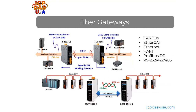We also provide fiber gateways that extend communication distances of CAN, EtherCAT, Ethernet, HART, PROFIBUS DP, and serial devices. Through these gateways, you can connect fiber cabling to extend distances. For example, the I-2533CS supports communication distances up to 30 kilometers, allowing you to create a CAN tunnel over fiber.